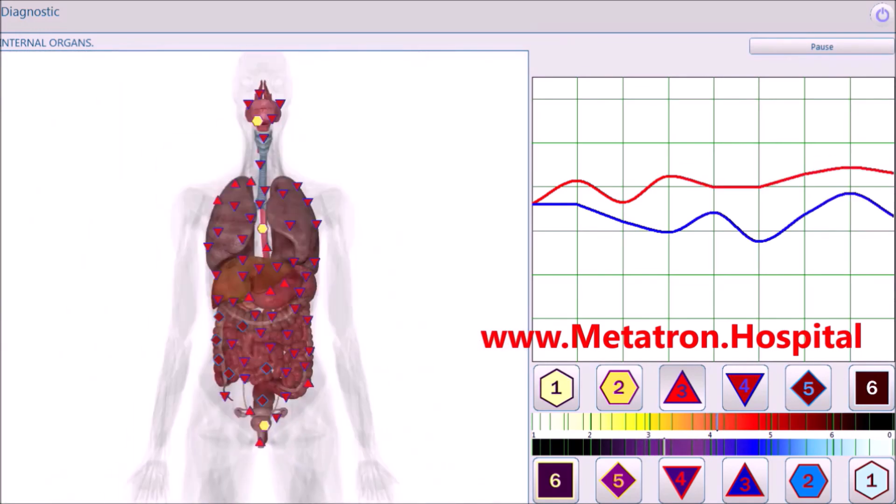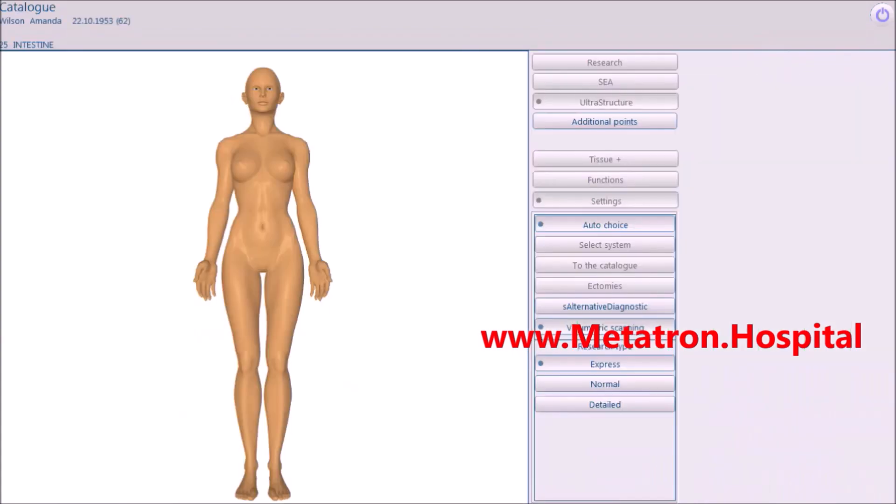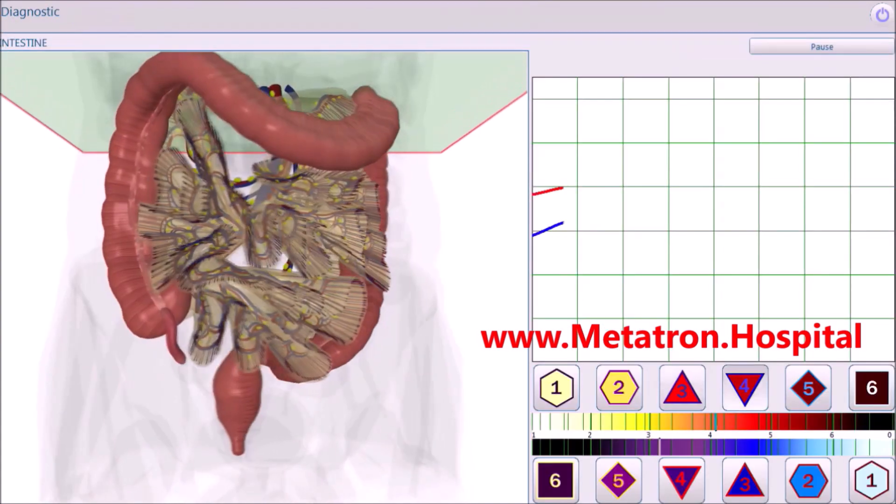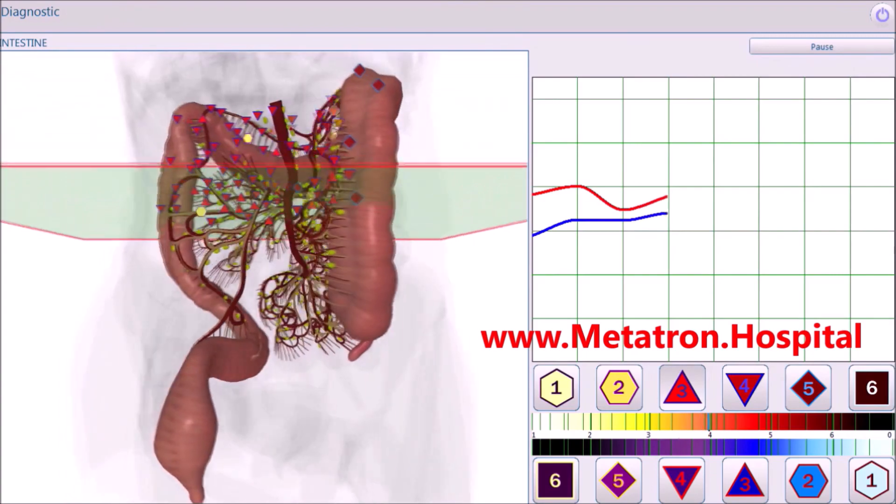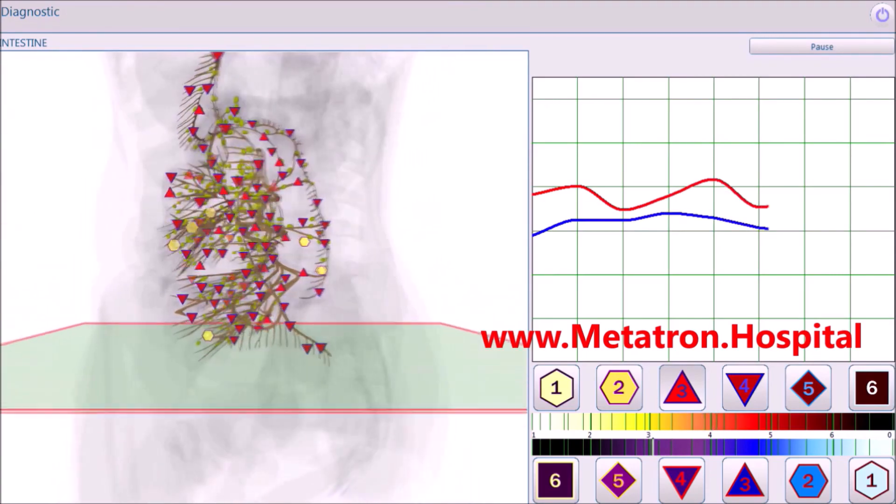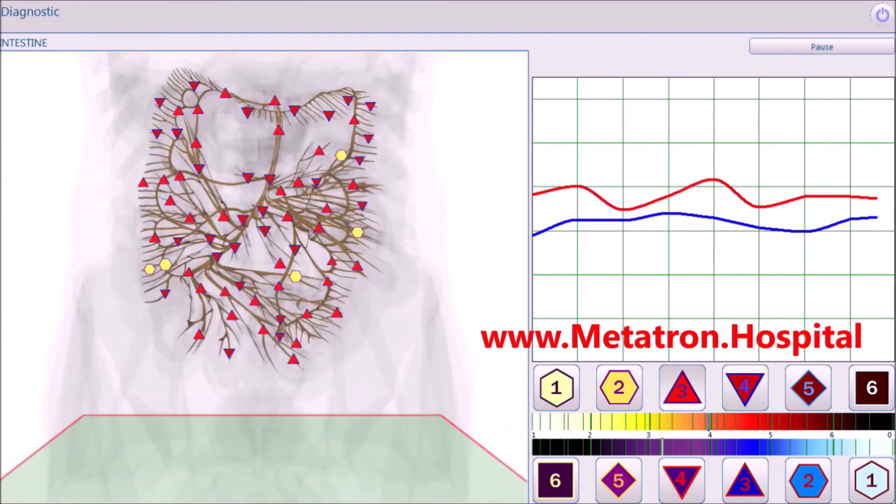Distance treatment is especially ideal as a general support two to three times a week. A remote treatment session is usually shorter, around 30 minutes. During one session, three to five organs, body parts, or one to two systems can be treated.